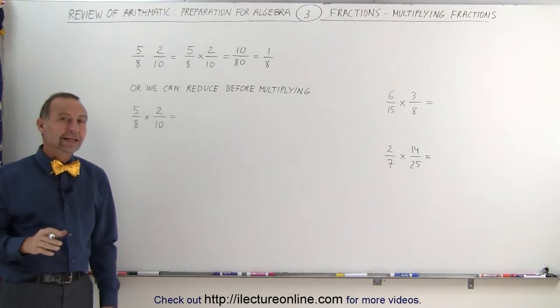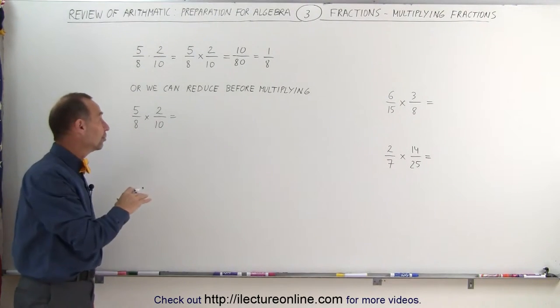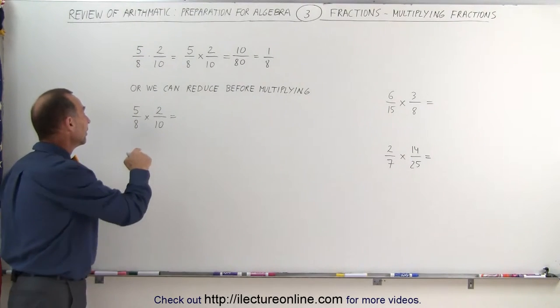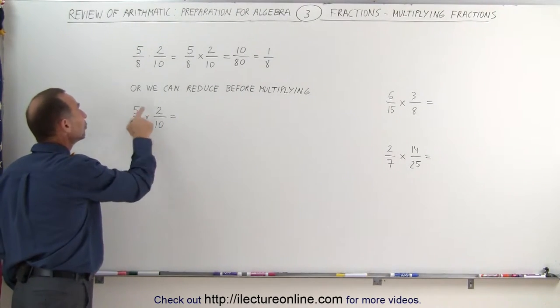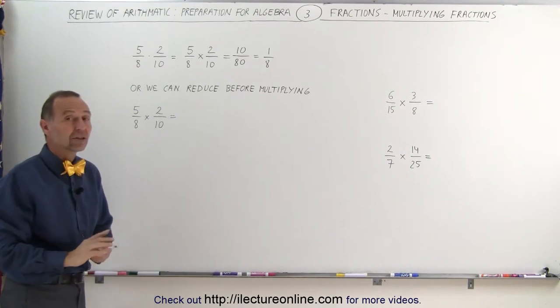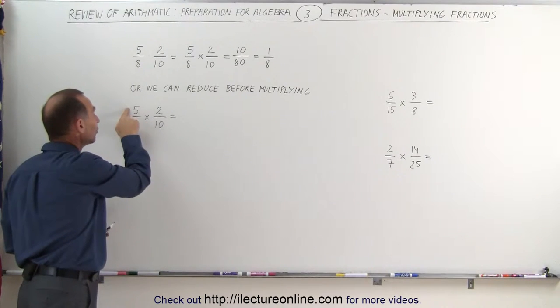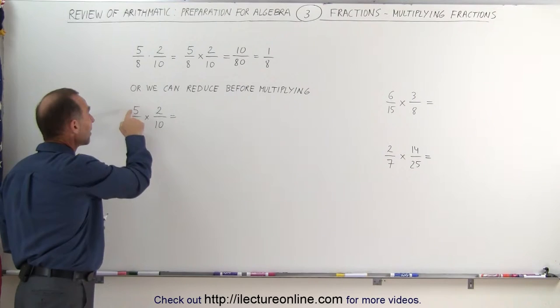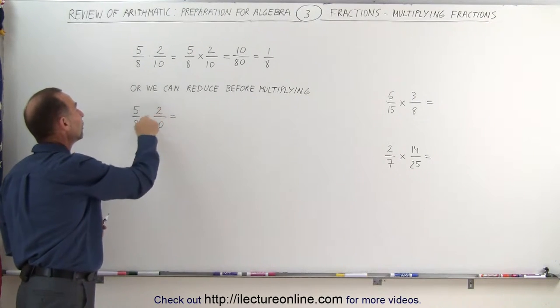What's more preferable is that you can reduce the fraction before you start multiplying. For example, 5 eighths cannot be reduced but 2 tenths can be reduced. And also when you're multiplying two fractions together you can actually reduce the numerator of one fraction with the denominator of the other fraction. For example, we can reduce 5 and 10 and we can reduce 2 and 8.